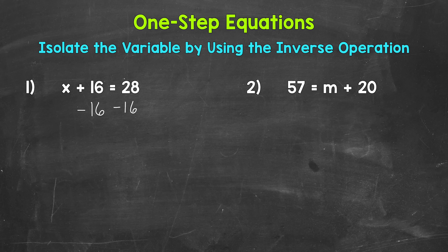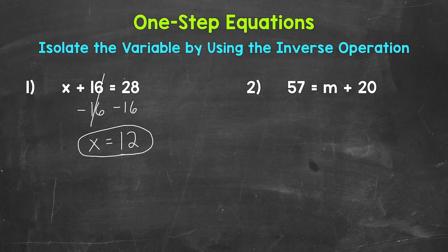Now on the left side of the equation, we are adding 16 and subtracting 16. So these 16s are going to cancel out. They equal 0. So our x is isolated now. It's all by itself. x equals, and then on the right side of the equation, 28 minus 16 equals 12. So x equals 12. That's our solution.